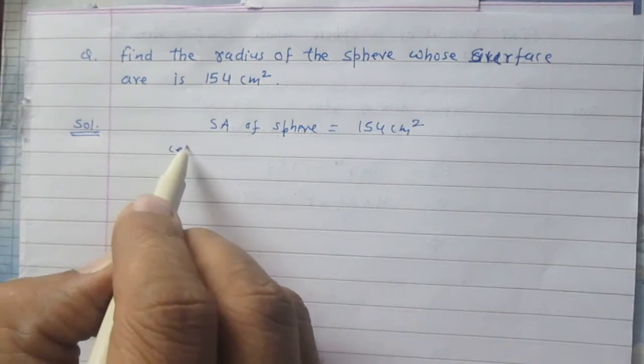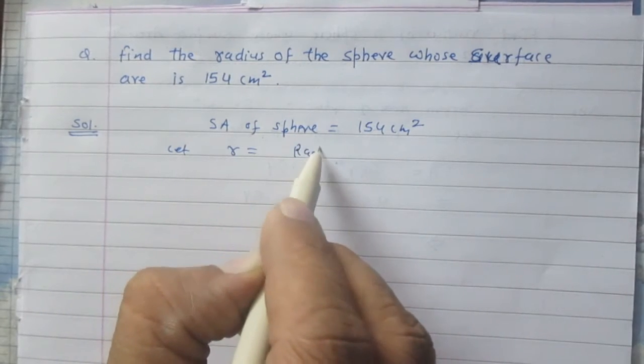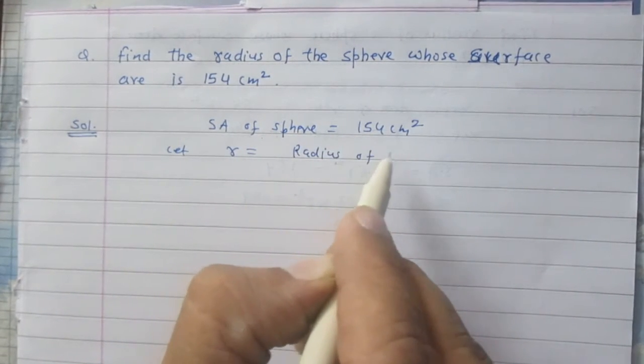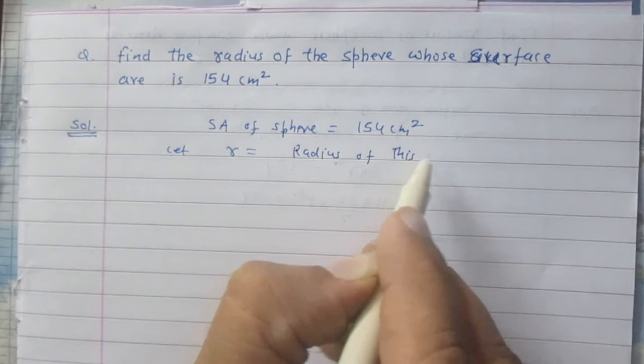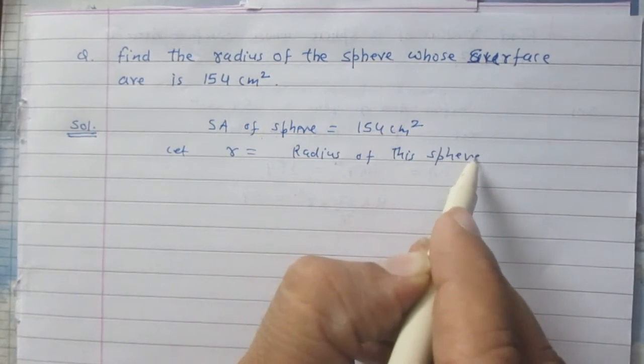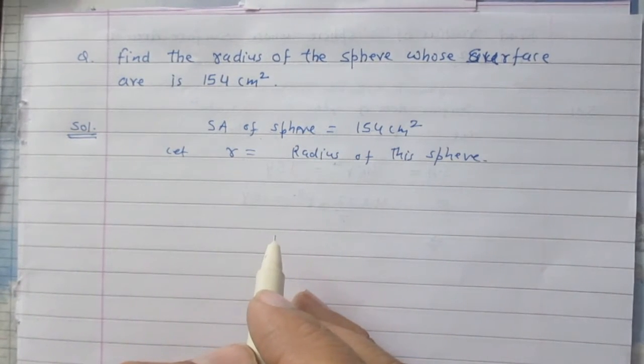Let us assume that r stands for radius of the sphere. So according to the formula,